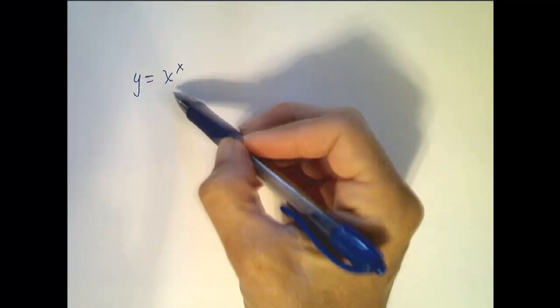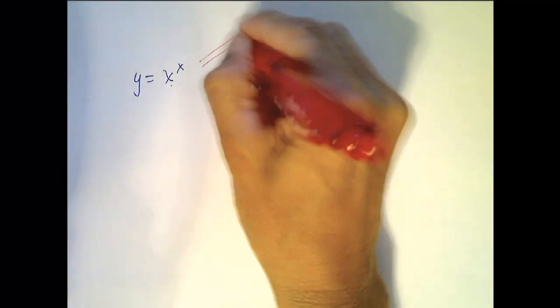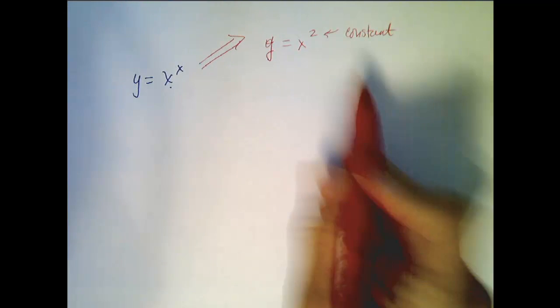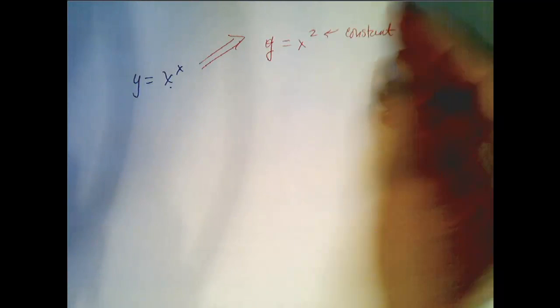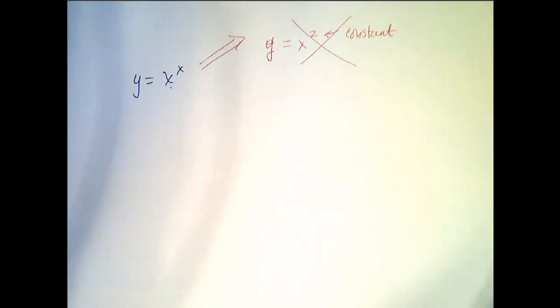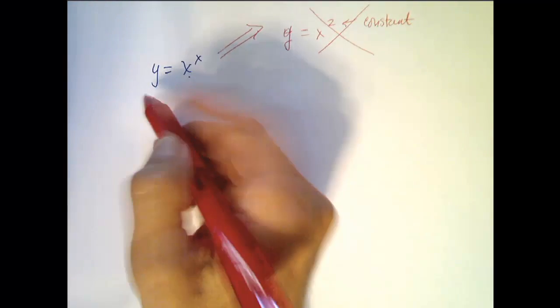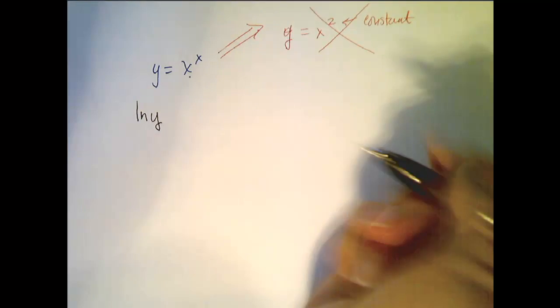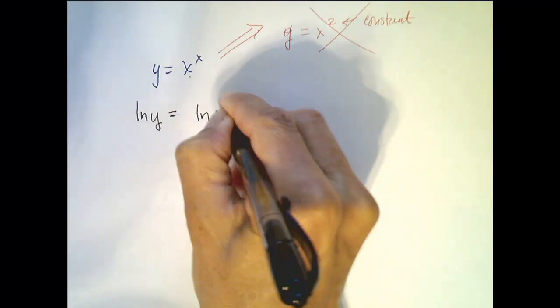Let's look at this very basic example, but one that should automatically make you think of logarithmic differentiation. Here we have y equals x to the x. This is very different than when we had y equals x squared, where 2 is a constant. When we had y equals x squared or any constant, we applied the power rule. But here the exponent is not a constant — it's changing — so the power rule will not apply.